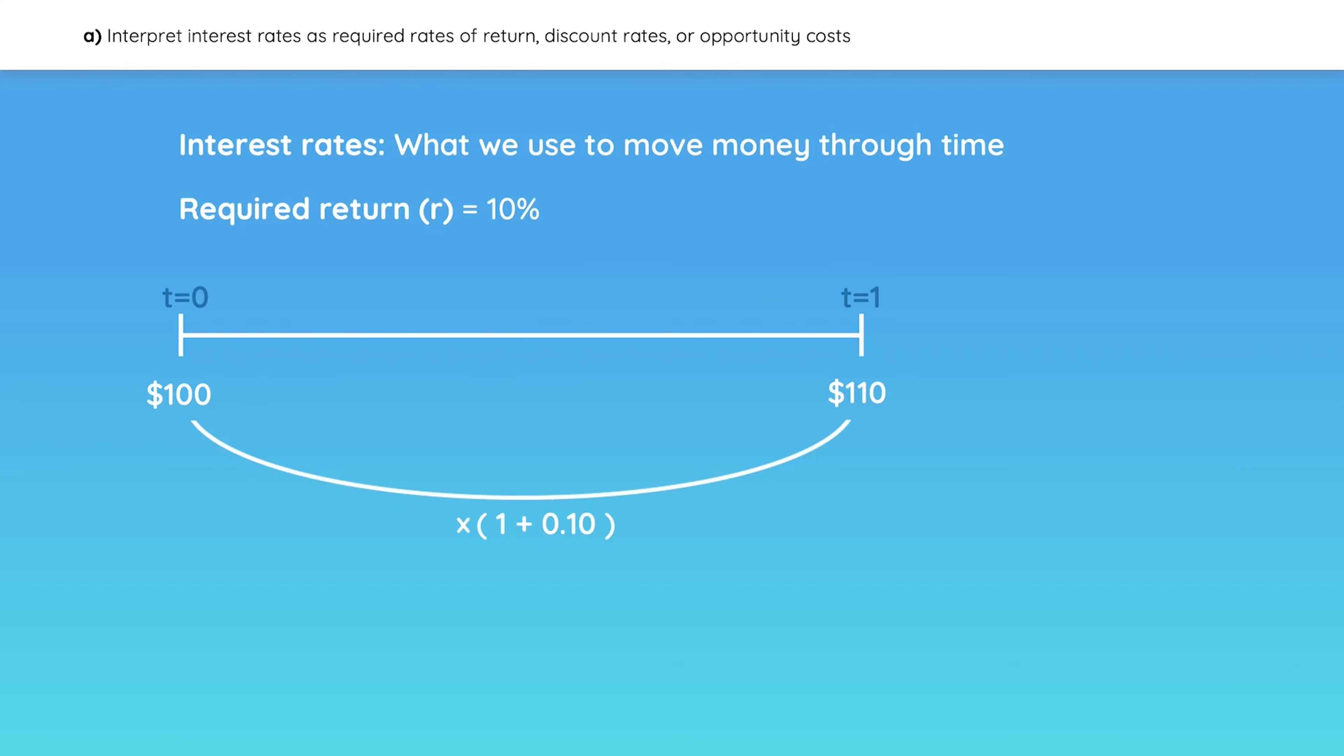It works the other way around too. If you divide $110 by 1 plus R, it equals $100. In other words, any investor with a required return of 10% should be indifferent between $100 today or $110 a year from now.